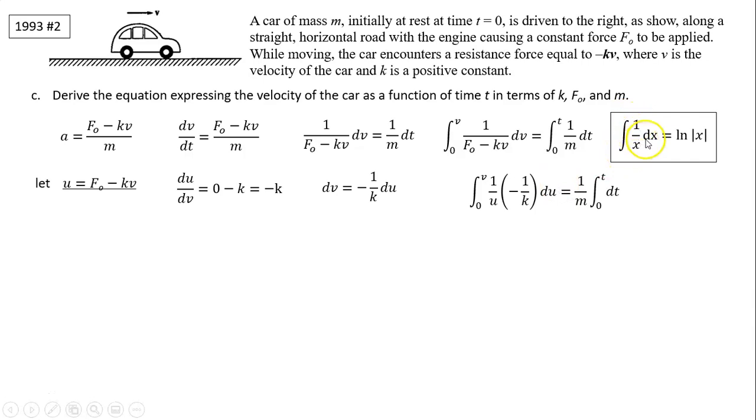Now we have 1 over u du. It's very similar to 1 over x dx. We know that's log x. We have this negative 1 over k, which is just constant. We can take it out. And on this side, 1 over m is constant. We take it out and the integral of dt is just t.